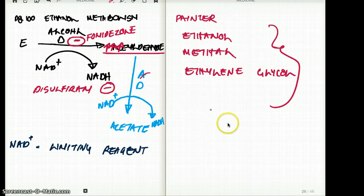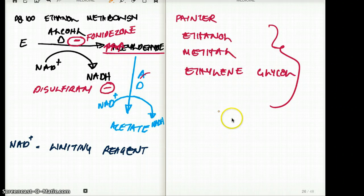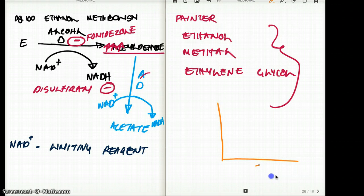Ethanol is excreted through zero order kinetics. What does that really mean? Zero order kinetics mean that despite, let's say this is time on the x-axis and this is plasma concentration of ethanol in the blood or in the serum.